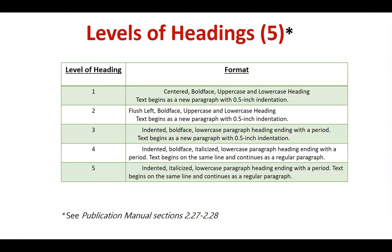When using different sections within the paper, you'll use different levels of headings formatted in a particular way. The first or main level is centered, bold-faced, with uppercase and lowercase letters, and text begins as a new paragraph with a half-inch indentation. There are also second, third, fourth, and fifth levels of headings. In most cases, only levels one, two, or possibly three are used in student papers, so you probably will not need to look at levels four and five.